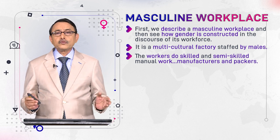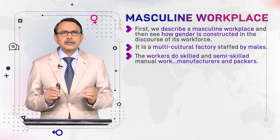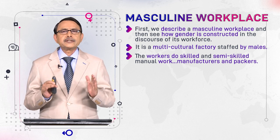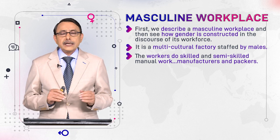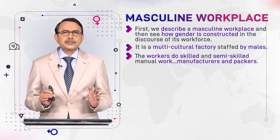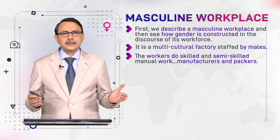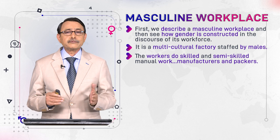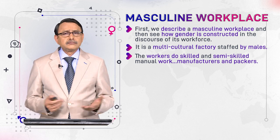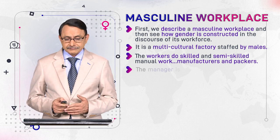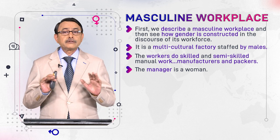The workers do skilled and semi-skilled work. Skilled work for which they need some professional training, like engineers and technicians. And semi-skilled work where they don't need such formal training — for example, those people who do packing, loading, uploading etc. But the manager of the factory is a woman.